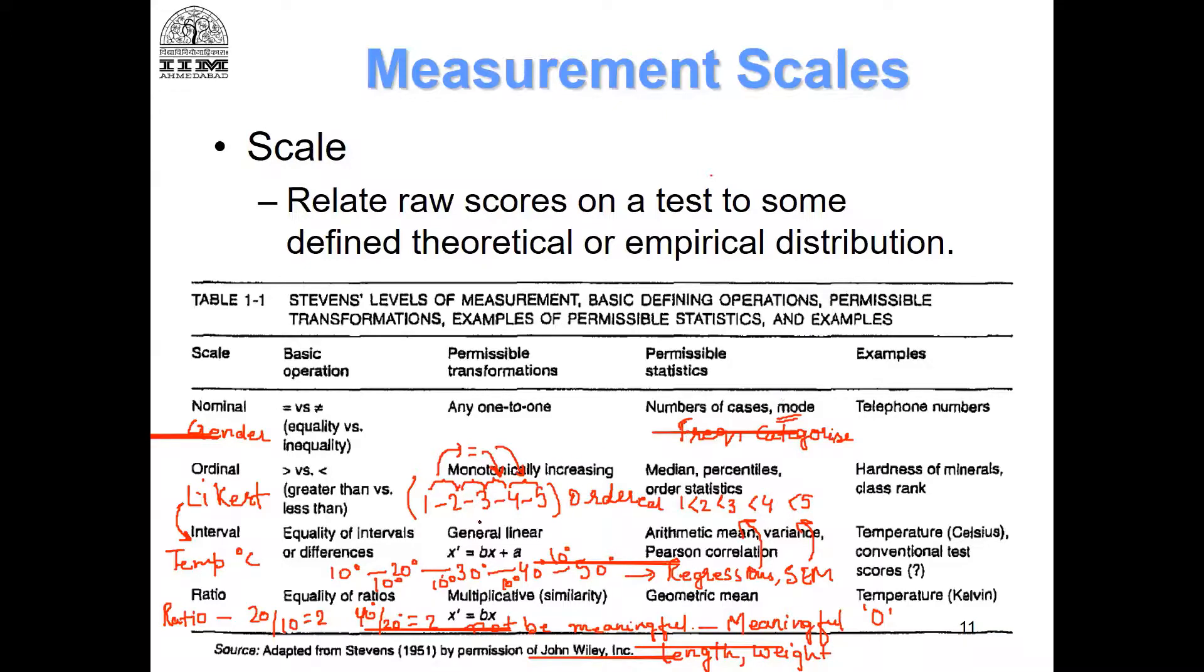That is something we cannot say for sure. The difference between strongly disagree and disagree may not be the same as agree and strongly agree. So we can't really say for sure, and therefore they are considered as ordinal scale. Having said that, I am repeating, we don't bother about this distinction in our research work and we do all these statistics.